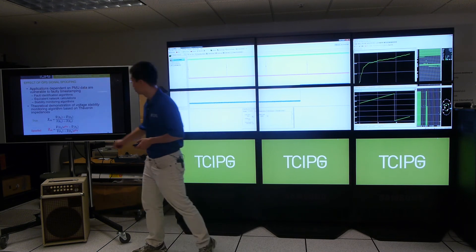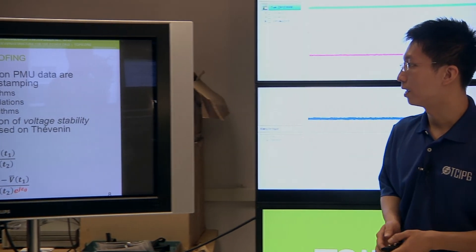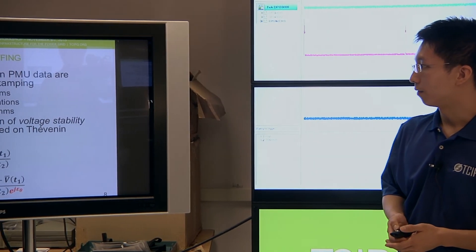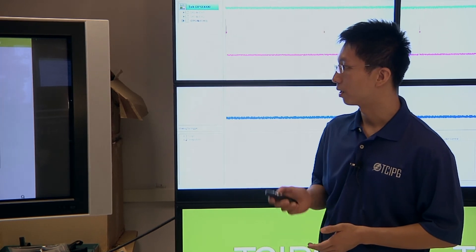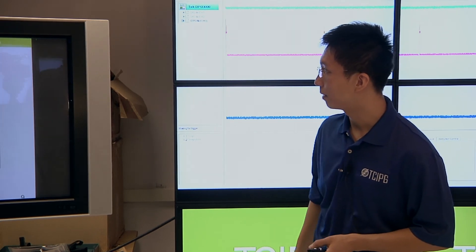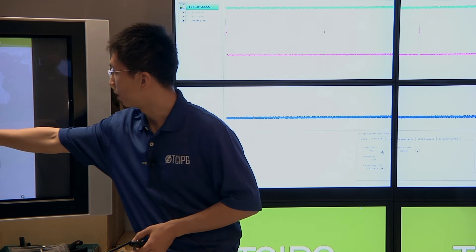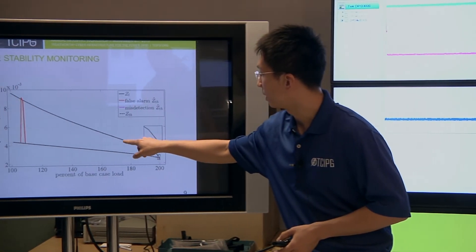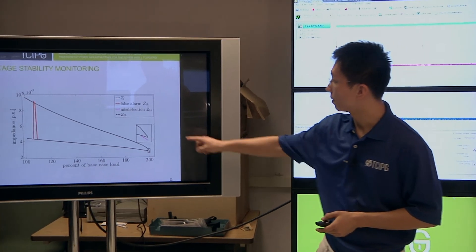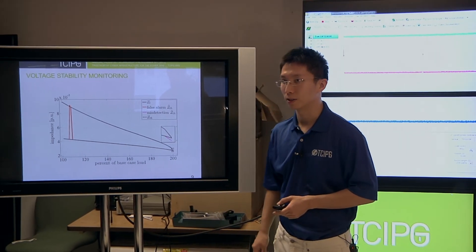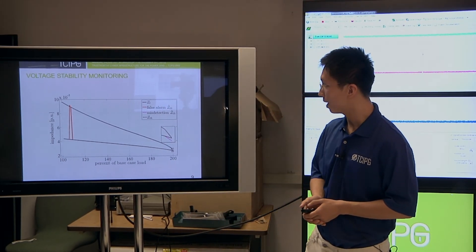However, by spoofing, we could introduce an error, which is shown in red, epsilon theta, in the angle of the voltage magnitude and the current measurements. So then when you cause that kind of error, what happens is that when there is no spoofing, you have the black lines showing the load impedance and Thevenin impedance, and the load impedance is actually greater than Thevenin impedance, so the system is actually stable.